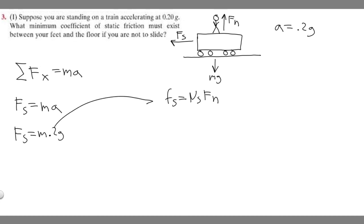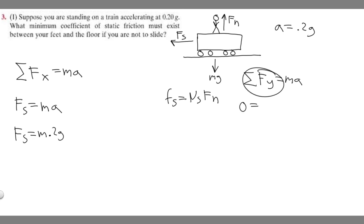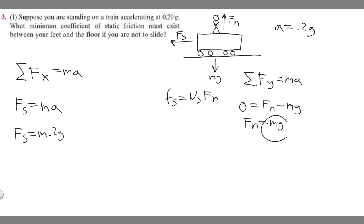Now we have to find what the normal force is. The sum of the forces in the y direction is equal to ma, but notice how the acceleration in y is going to be zero, so it equals zero. The forces in the y direction are F sub n going up, minus m times g going downward. So F sub n is just going to be equal to m times g. We're going to leave it like this because you'll see how it cancels out.